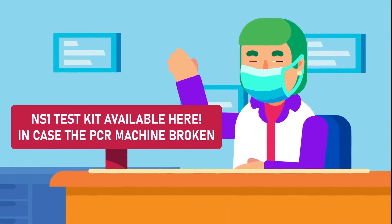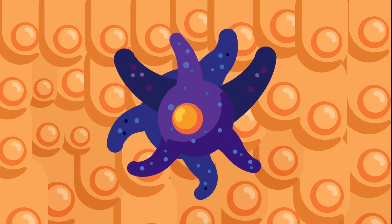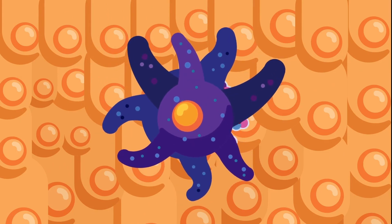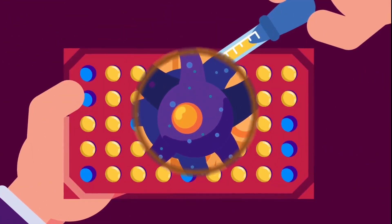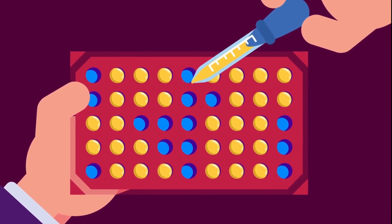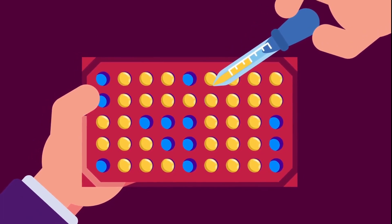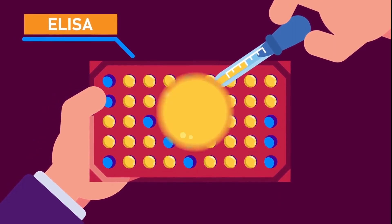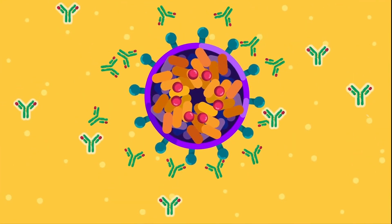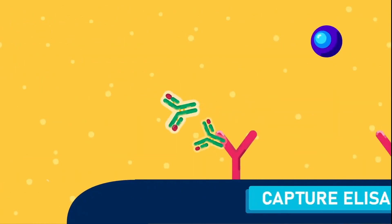Examples of serological methods include: first, NS1 detection — NS1 is a protein produced by cells infected by the Dengue virus; and second, enzyme-linked immunosorbent assay, or ELISA, which detects the antibodies produced by our body to fight the viruses.